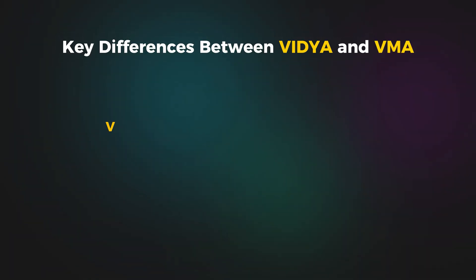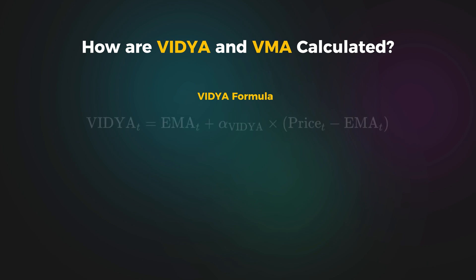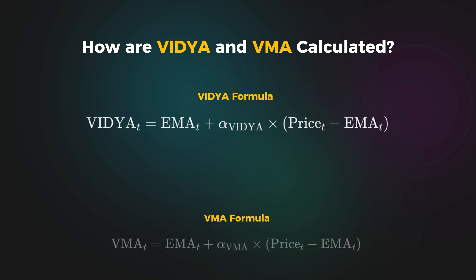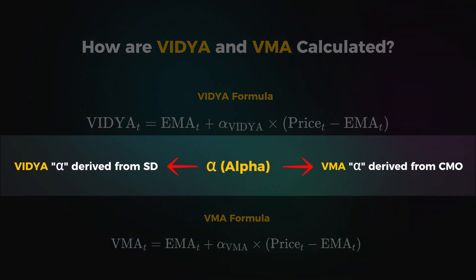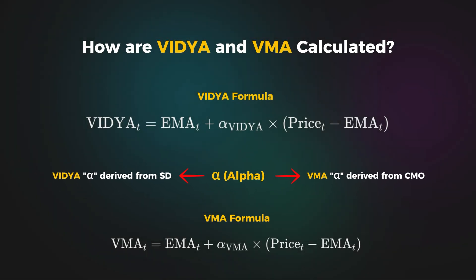The alpha of Variable Index Dynamic Average uses standard deviation to adjust its sensitivity to volatility, while Variable Moving Average adjusts using the Chande Momentum Oscillator for a smoother response to market momentum. Both indicators use an exponential moving average as their foundation, but it's the smoothing factor alpha that sets them apart. For VIDYA, alpha is based on standard deviation, while for VMA it's calculated using the Chande Momentum Oscillator.